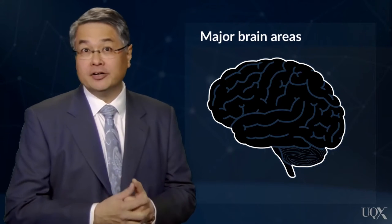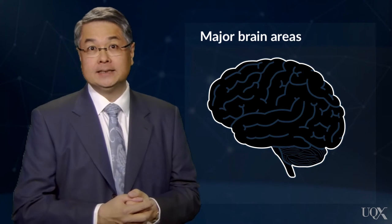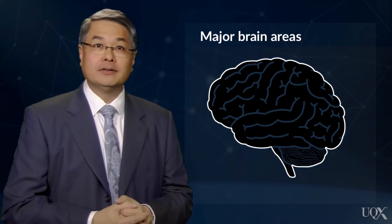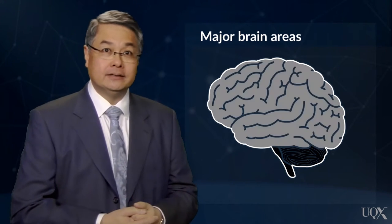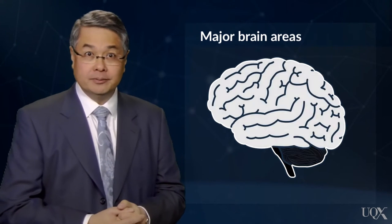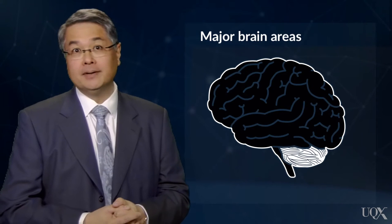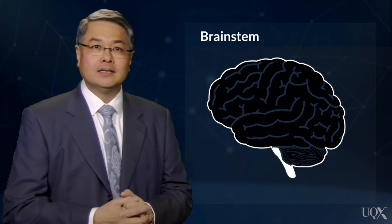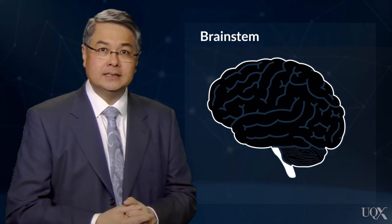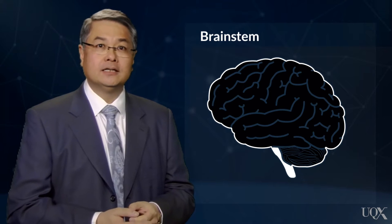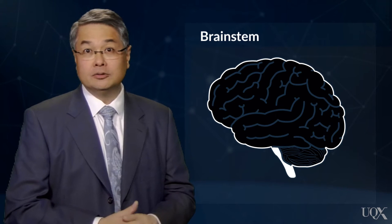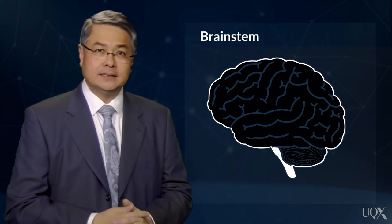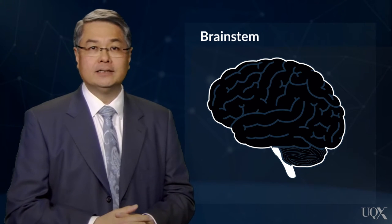The human brain is very much an interconnected web of parts, but the three major areas are the cerebrum, the cerebellum, and the brainstem. The brainstem connects the brain with the spinal cord and controls biological processes like breathing, digestion, and heart rate.